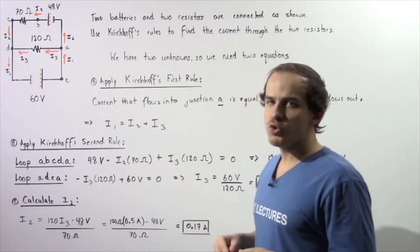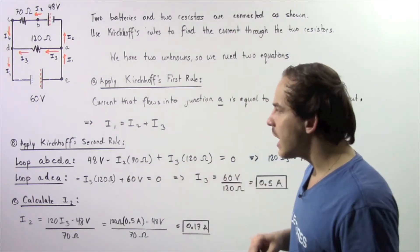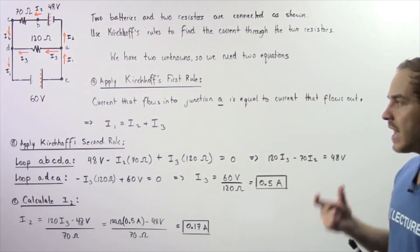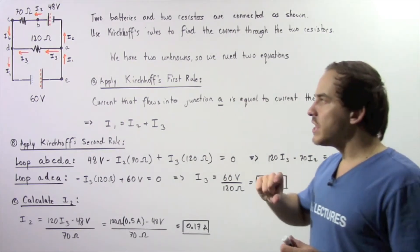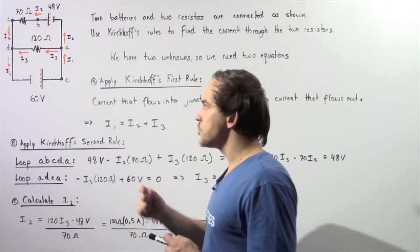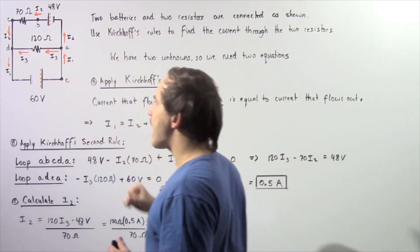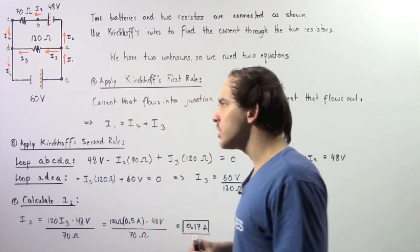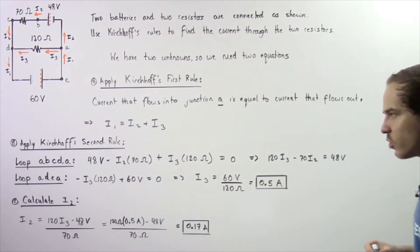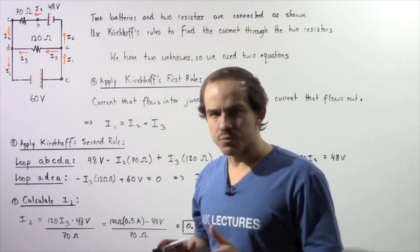Now let's apply Kirchhoff's second rule, which tells us that the change in voltage across any closed loop inside our electric circuit is always equal to zero. We'll choose two closed loops to analyze.